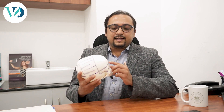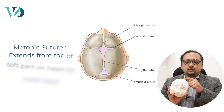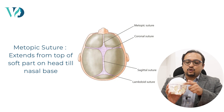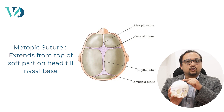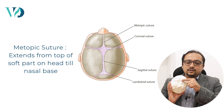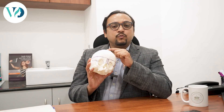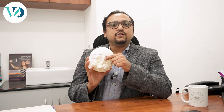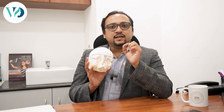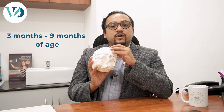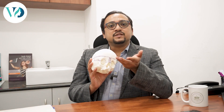It's very important to differentiate because treatment is totally different for both conditions. In a baby's head there is something called the metopic suture, which extends all the way from the soft spot on the top of the head until the nasal base. This metopic suture usually fuses between three months and nine months of age.